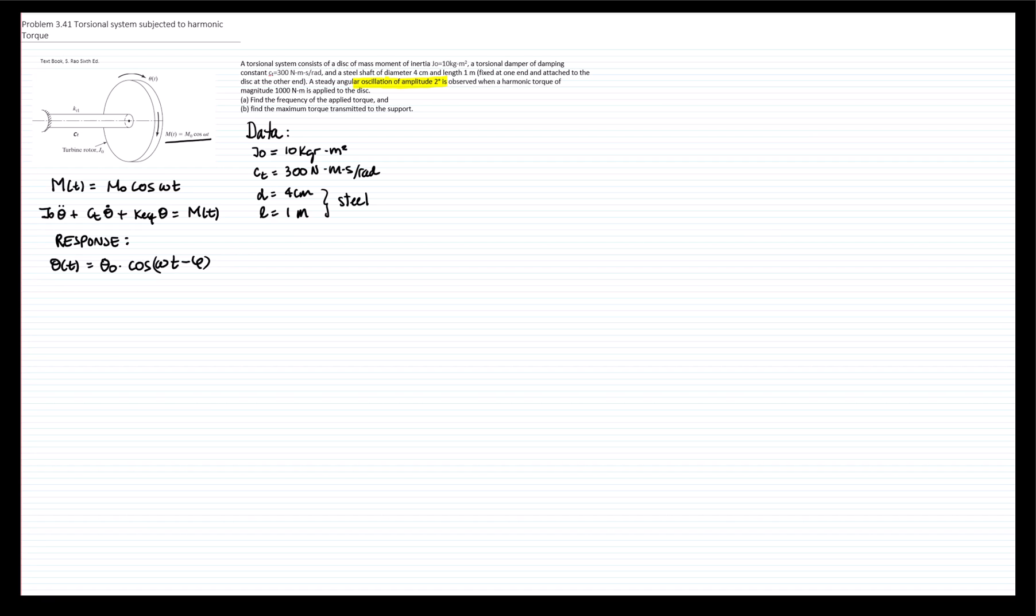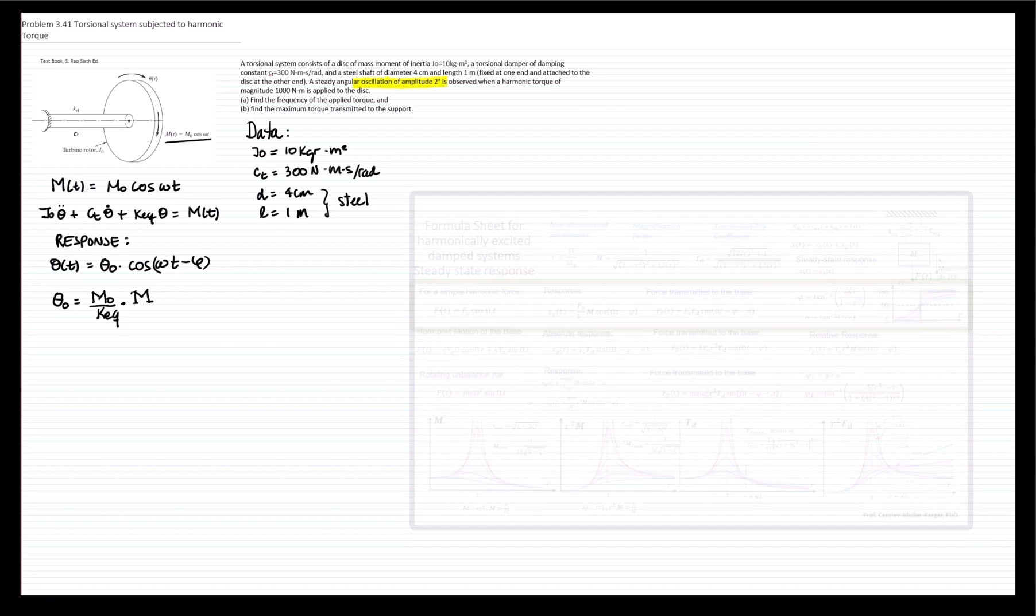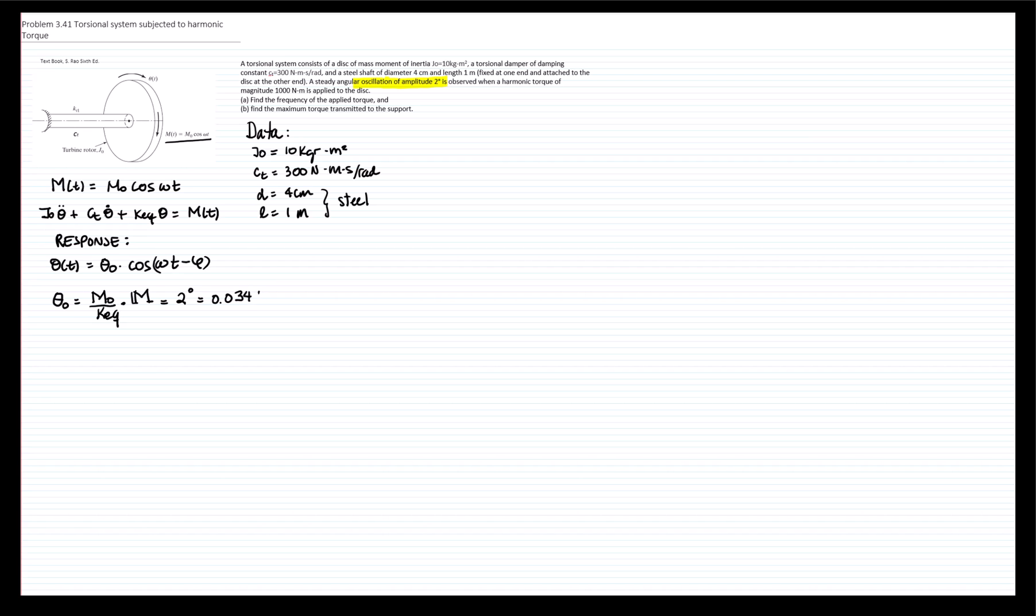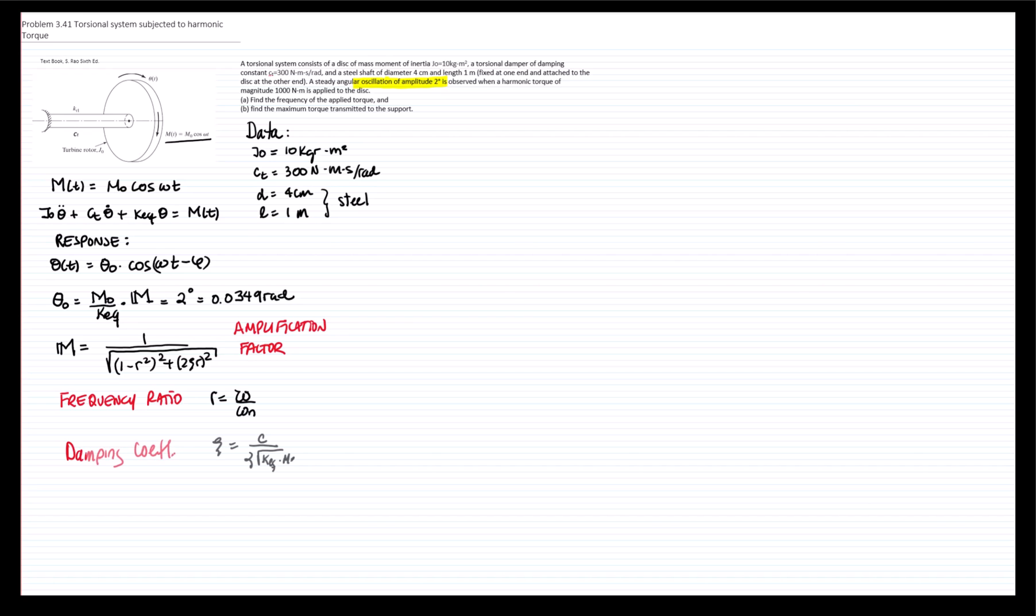has an amplitude, and the system will respond at the same frequency that it is being excited with the moment and with a phase angle. So we recall from the theory that when a constant force is applied, in this case, since we have a torsional system, it's a constant moment, that amplitude will be equivalent to the moment that is being applied divided by the equivalent constant of the spring times the magnification factor.